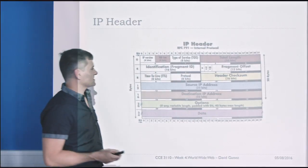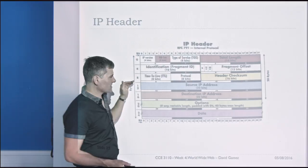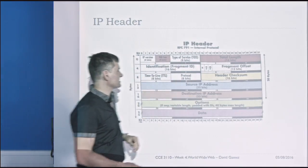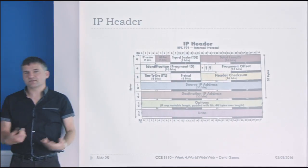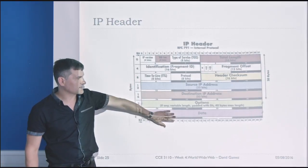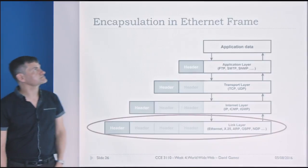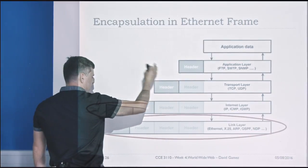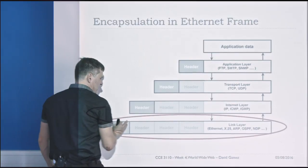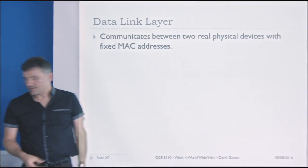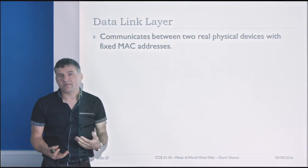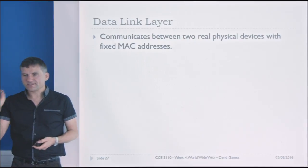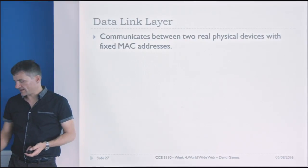The IP header enables us to send a message from one particular IP address to another IP address. There are various bits in there to ensure reliable transmission and no corruption in the data, with the data at the bottom of the message. Finally, we've got this packet wrapped in TCP, wrapped in IP, and finally we've got the data link layer — another header on top, enabling us to communicate between two real physical devices. In this case the address is the MAC address, not the IP address.